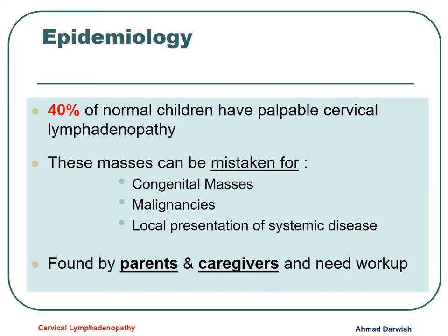What about lymphadenopathy? It is estimated that about 40% of normal children have palpable cervical lymph nodes. These lymph nodes could be mistaken for something congenital, sometimes parents could be anxious about malignancy, and it could be just a local presentation of a systemic disease. These lymph nodes are usually found by the caregivers and parents during routine activities like having a shower or wearing clothes.